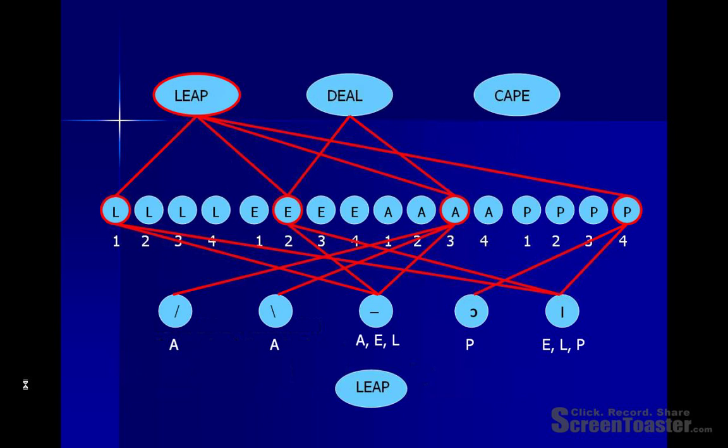These letter units pass on their activation to particular word units, some of which are shown on the screen. The letter unit for L activates the word 'leap.' The letter unit for E in the second position activates the words 'leap' and 'deal,' but not the word 'cape,' which also has a letter E but not in the second position. The letter unit for A in the third position activates both 'leap' and 'deal,' and the letter unit for P activates the word 'leap.'